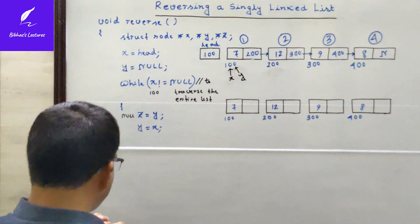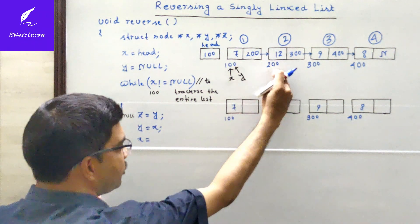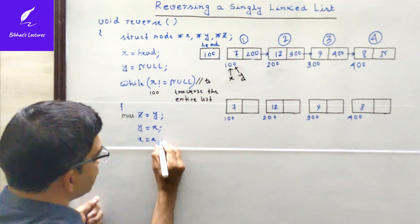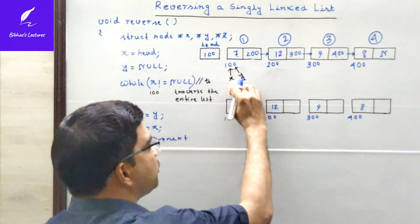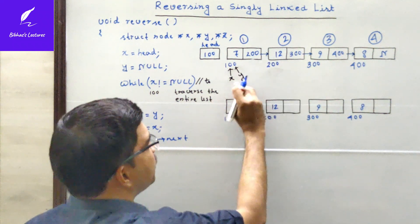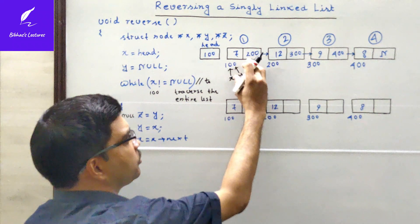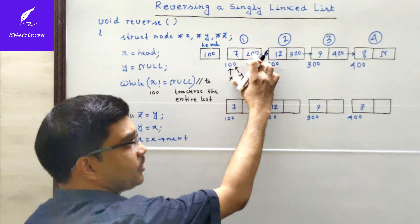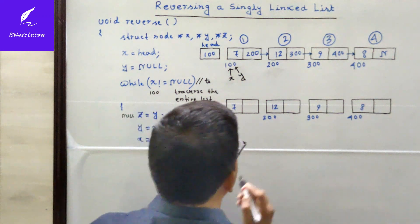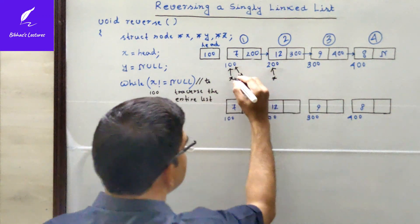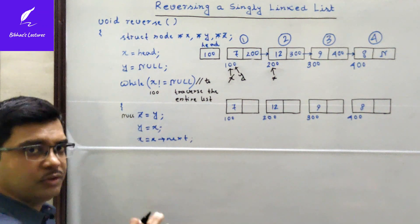The pointer x has shifted to the second node. Y now points to the first node and z is null. Node 100's next part has been set to null because after reversing, node 100 will be the last node of the list and the last node's next always contains null.